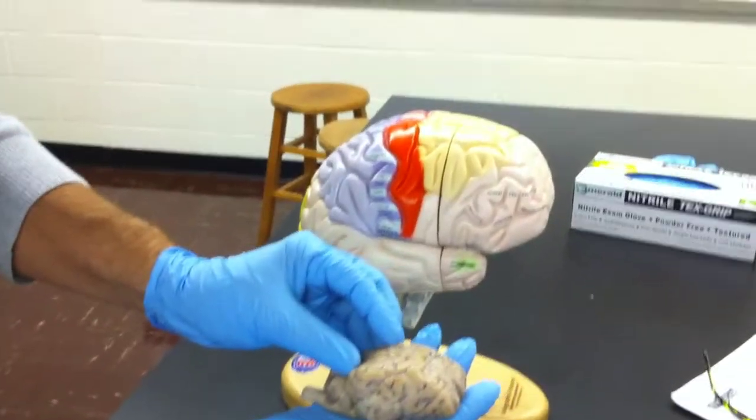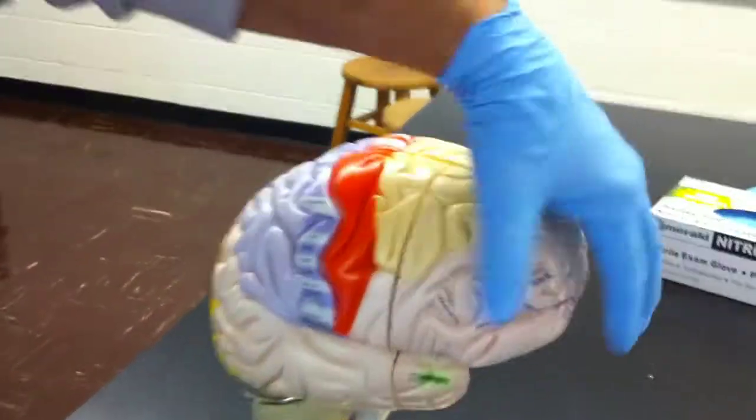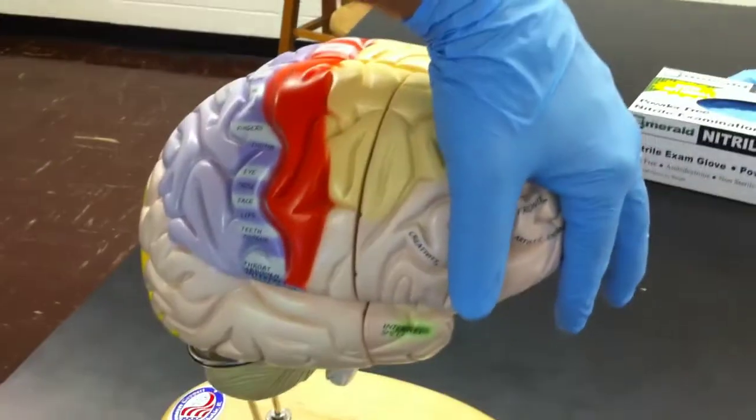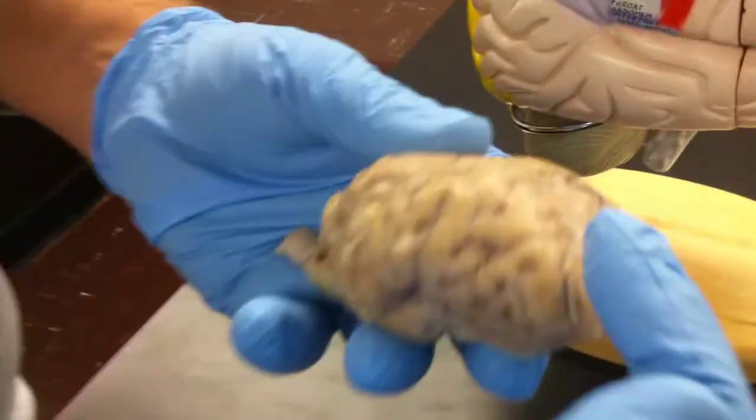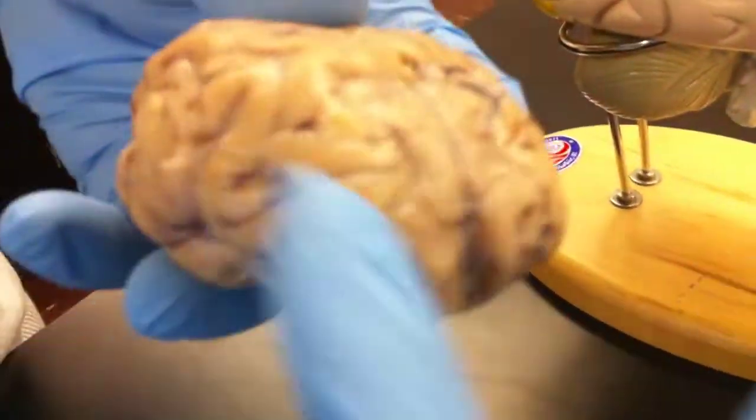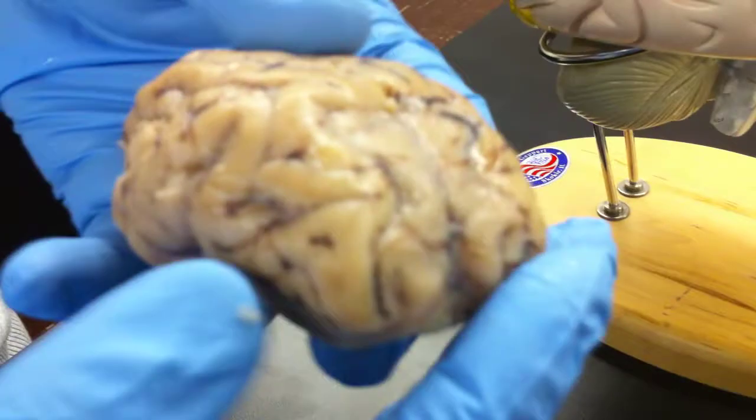Like for example, you can see how big the frontal lobe is. It's essentially where I'm holding my hand here on the human, whereas on the sheep it's just this very small part of tissue in the front of the brain.